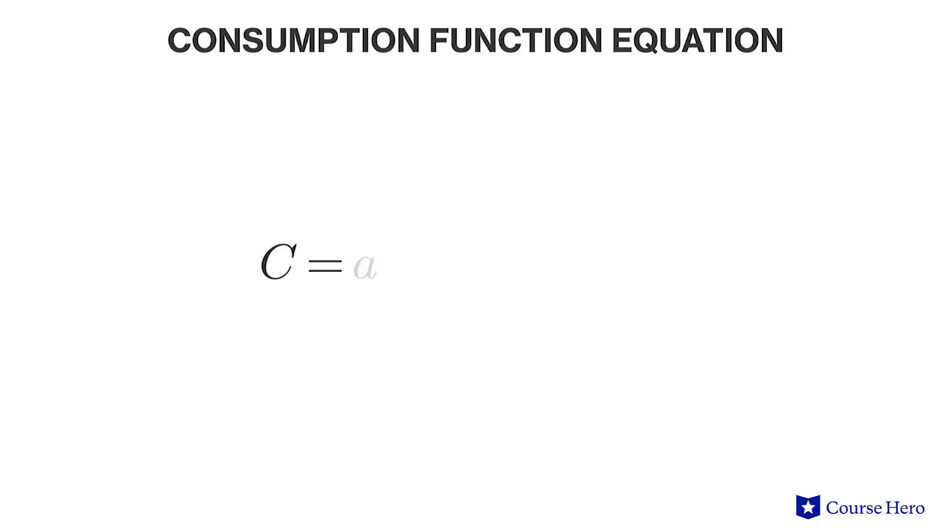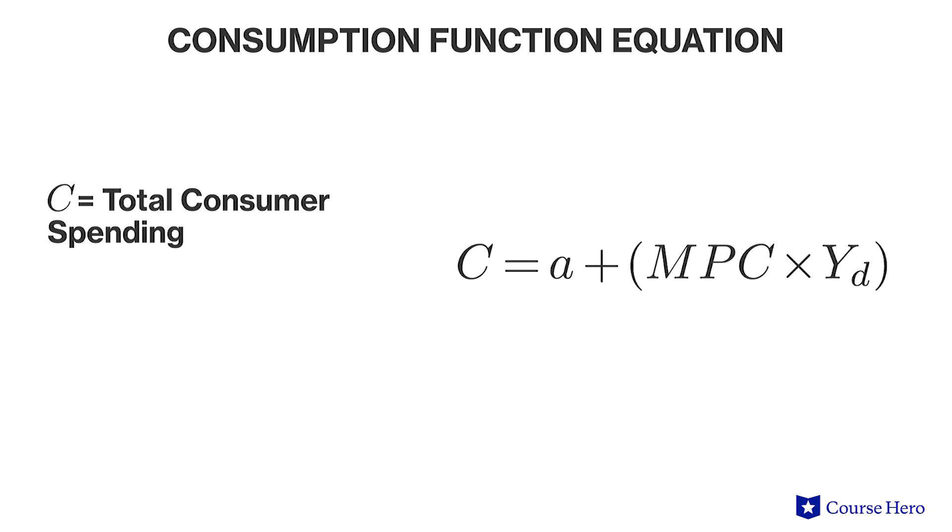This relationship is typically outlined with a graph of the following linear equation. C is equal to A plus MPC, the marginal propensity to consume, times YD, disposable income, where C represents total consumer spending and A represents the required purchases even without disposable income, such as food and shelter.